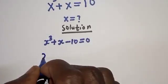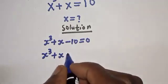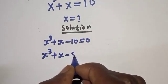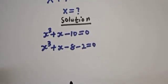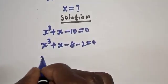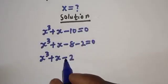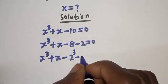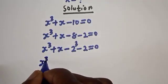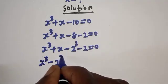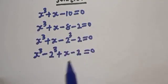Then s raised to power 3 plus s minus 10 can be written as: we rewrite minus 10 as minus 8 minus 2, giving us s raised to power 3 minus 2 raised to power 3, plus s minus 2, is equal to 0.